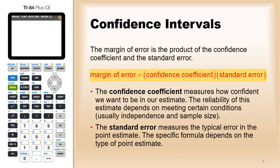The standard error is a measure of the typical error in a point estimate. So the specific formula depends on the type of point estimate.